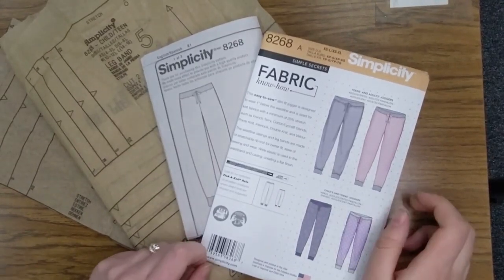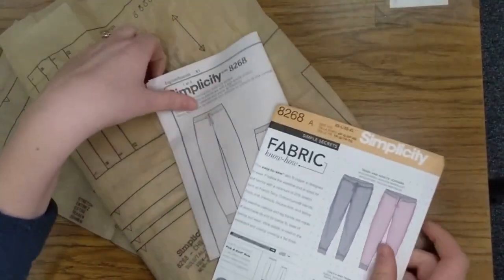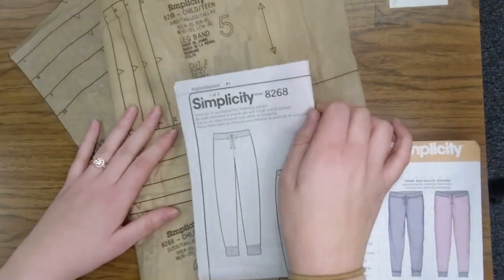Here we have our three parts of the commercial pattern: our pattern envelope, our pattern guide sheet, and our pattern tissue.